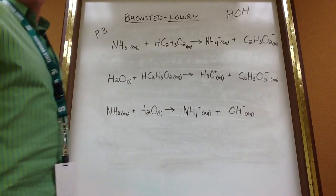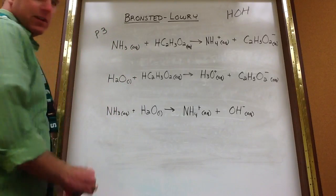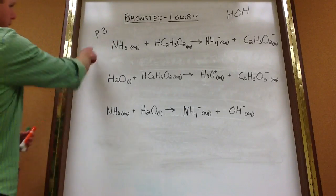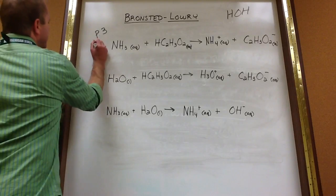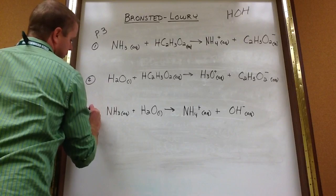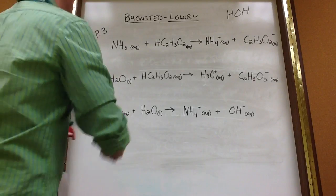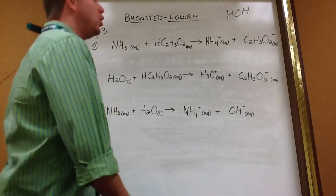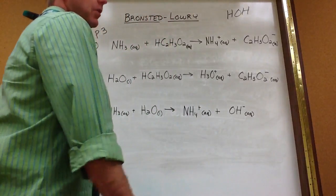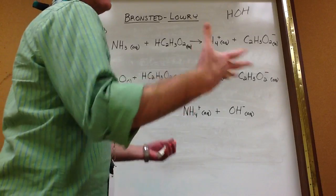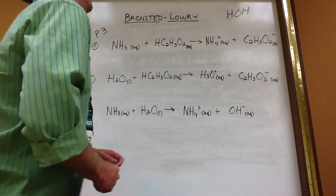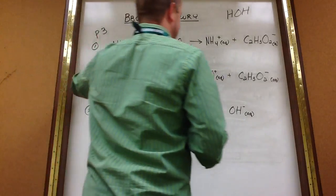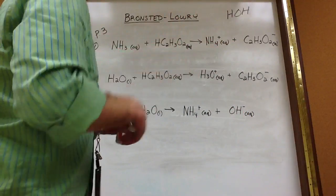The big thing with Bronsted-Lowry is that you have to get your pairs right. On page three I put the first three problems. The first thing is realizing what comes from what. By definition, a Bronsted-Lowry acid is a proton donor. When you donate something, it means you give it away. Likewise, when you accept something, you become the acceptor. So the first thing you've got to do is say to yourself: in number one, which two things — there will always be something on the reactant side and something on the product side — looks like they go together.